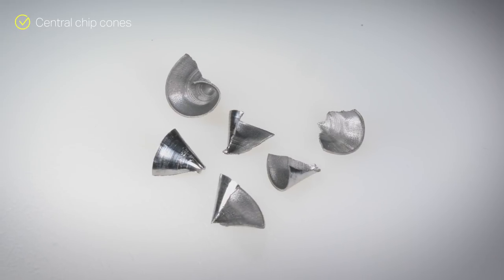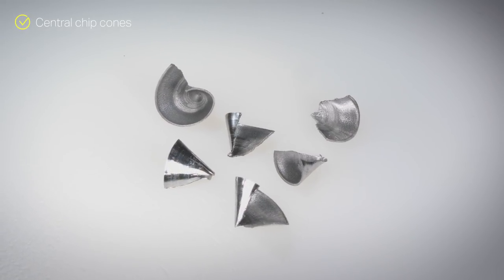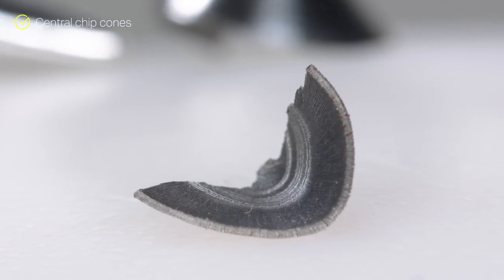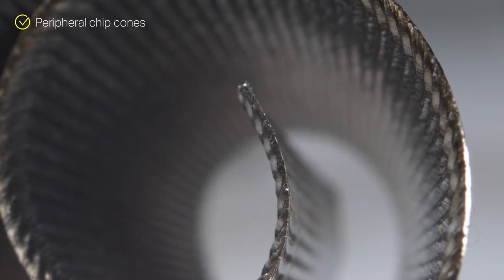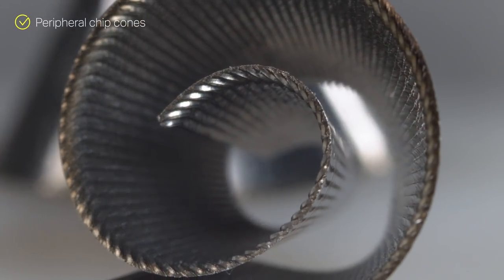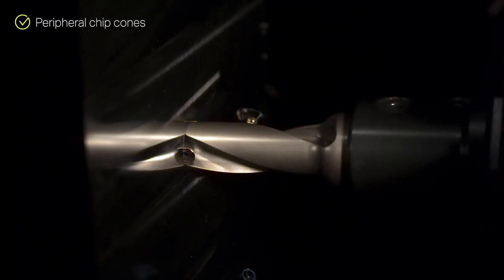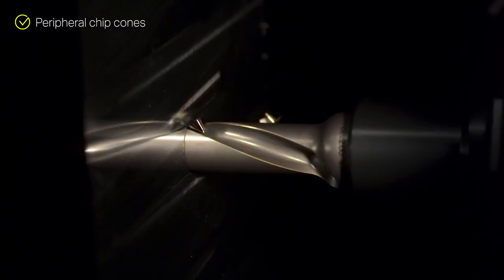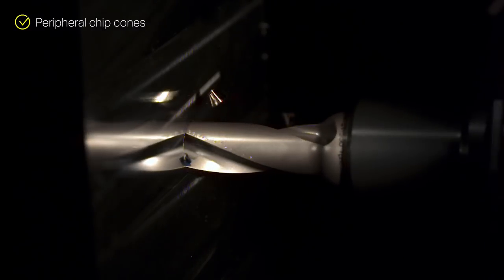Higher feed rates will produce small cone shaped chips which evacuate easily. Peripheral insert chips are typically cone shaped, rolled loosely or tightly depending on the feed rate. These chips evacuate easily and are highly unlikely to cause problems.